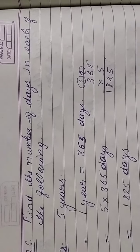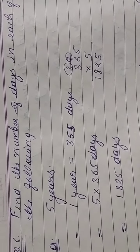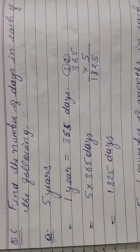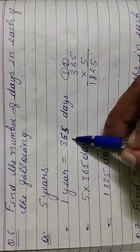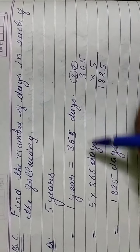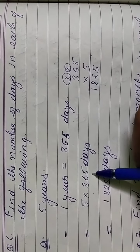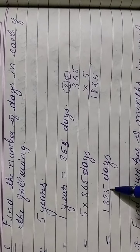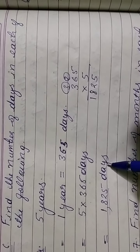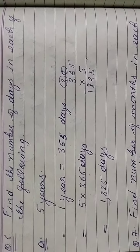Question number 6: Find the number of days. Here it is years to days — normally 1 year equals 365 days. So 5 × 365: after multiplication we get 1825 days. That is your answer.